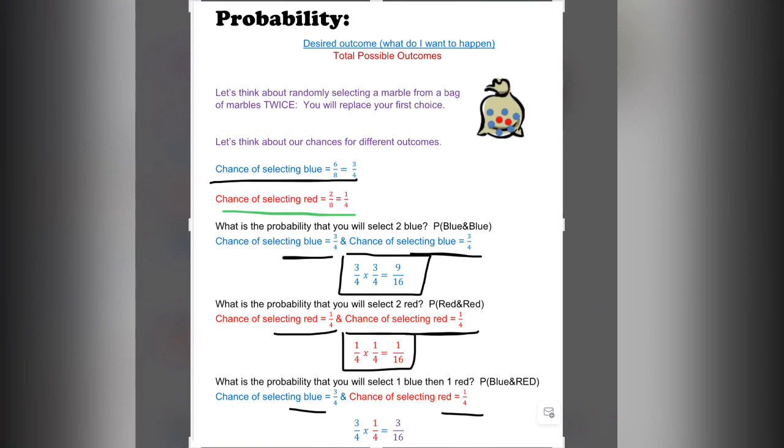Lastly, blue then red is 3/4 times 1/4, which gives me a 3 out of 16 chance.